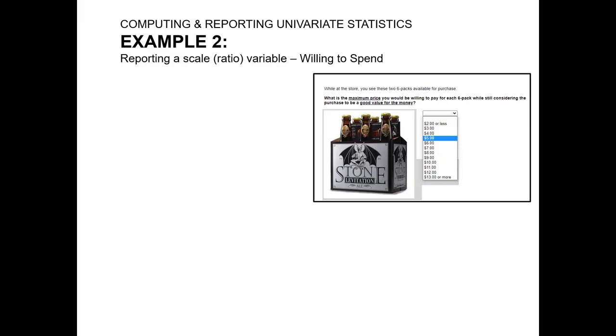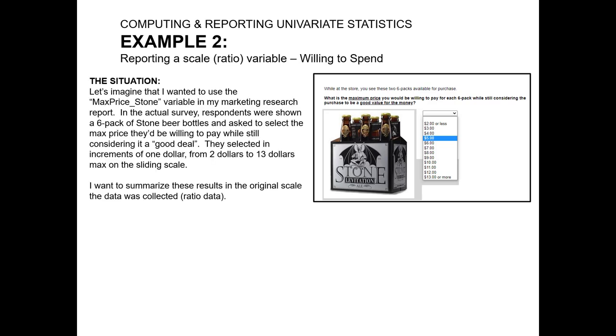In our second example, we're going to report on a ratio level variable, someone's willingness to spend on a six pack of craft beer. There's a variable in our dataset called max price stone. This is the situation where we showed individuals a six pack of stone beer and asked them what they consider the maximum price to be for this beer while it still being a good value for the money. And people could select in $1 increments between $2 and $13.